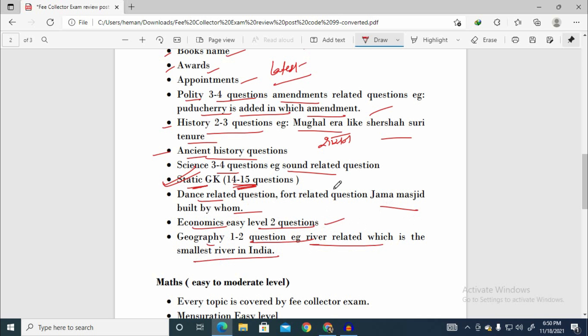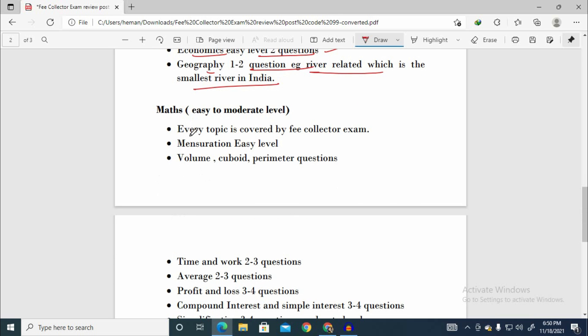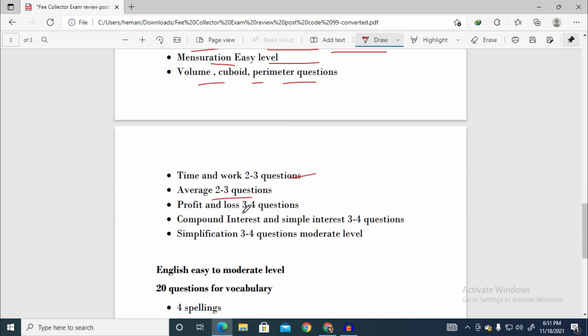Now let's talk about maths. Maths was easy to moderate level. Every topic is covered by fee collector exam. Many topics were covered - mensuration was very easy, volume, cube, time and work 2-3 questions. Simplification had 3-4 questions which were moderate level. Every topic is covered. There were DI - 5 questions, and bar graph questions, many bars.